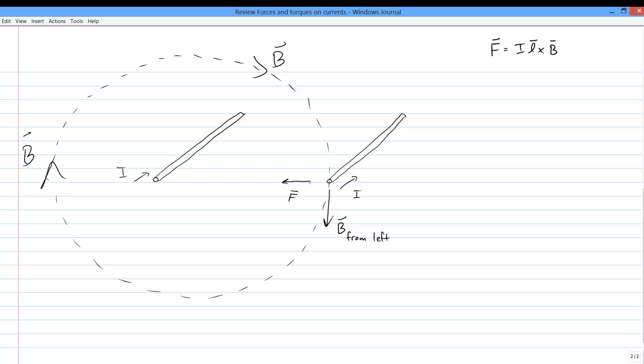And working things out in the other direction shows that the first wire feels a force to the right because of the field made by the second wire. Or to sum up, parallel currents attract one another.